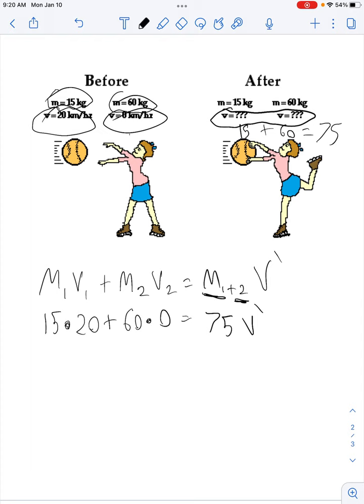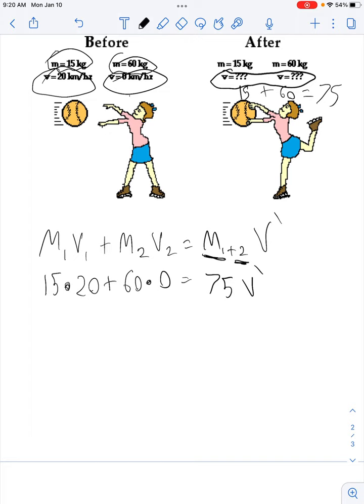All right. So the first thing that you want to do is you want to look at 15 times 20. So if you guys want, you can take a moment, put that in your calculator, do it in your head. But if you get 15 times 20, you should end up getting 300. All right. 60 times zero is just zero. We can cross that off and not even have to worry about it because 300 plus zero is still 300. Equal sign is next. 75 V prime falls.